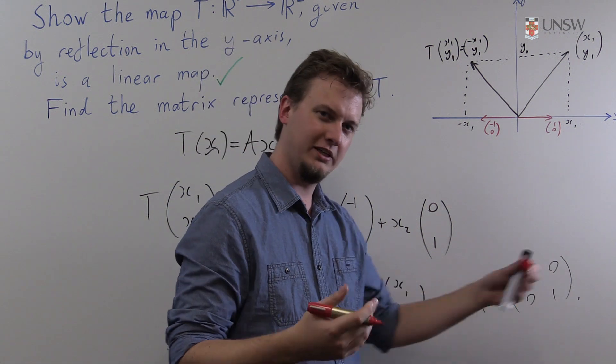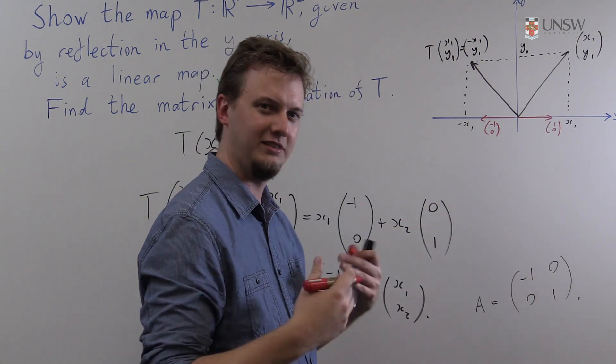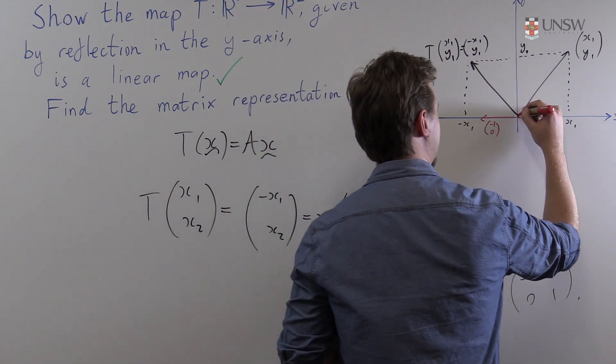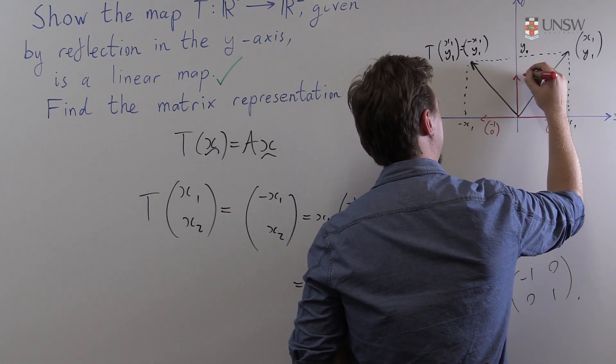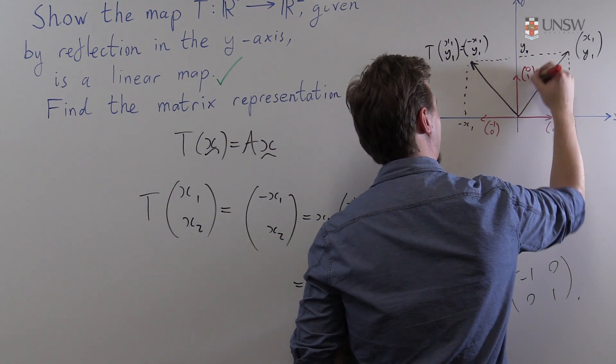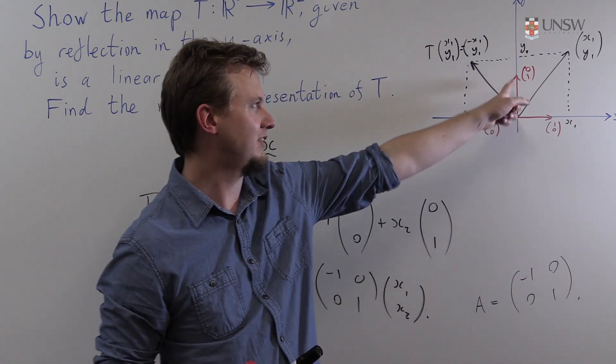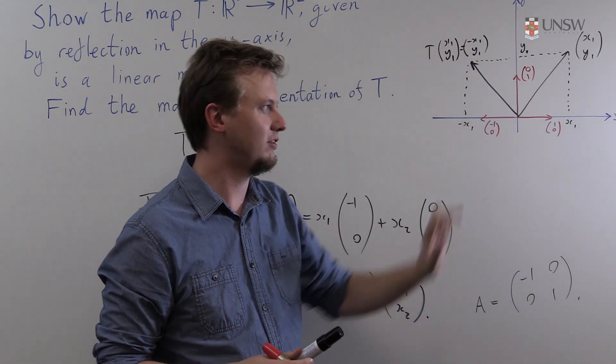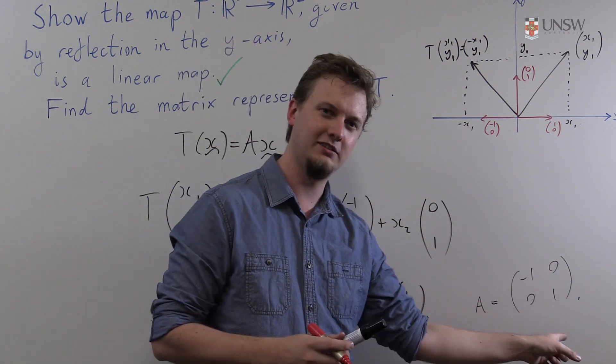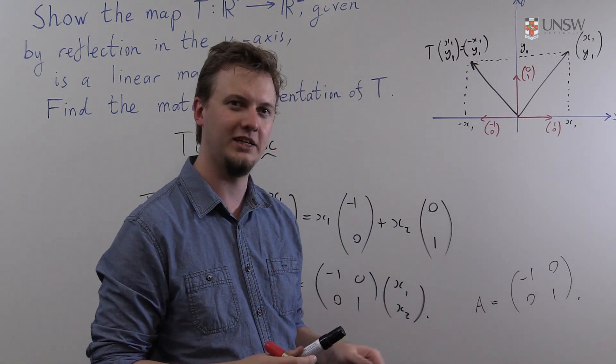And to find the second column of A, well that will be the image of the second standard basis vector. So that would be the image of the vector (0, 1). Now this vector actually lies on the plane of reflection so it doesn't go anywhere, it stays (0, 1) and yes that is the second column of this matrix A.